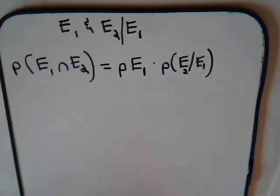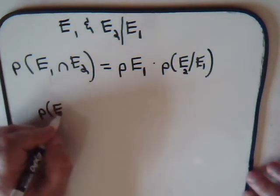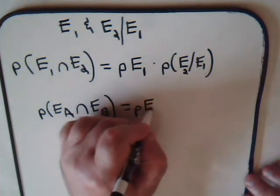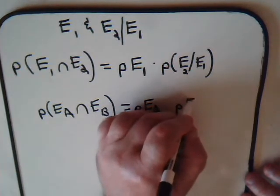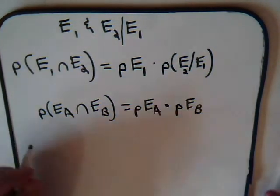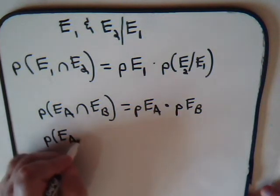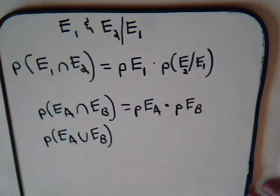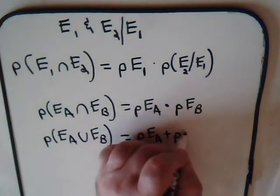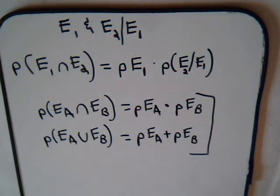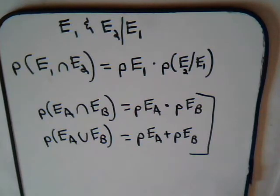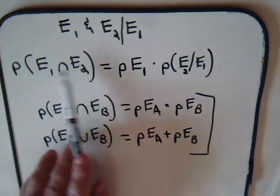What we discussed in earlier videos is that if we had two independent events, Ea and Eb, the probability of their joint occurrence was simply P(Ea) times P(Eb), provided they were independent. Also, if they were independent and mutually exclusive events, the probability of Ea or Eb occurring was just the sum of their probabilities. Here, the conditional probability formula always holds for joint occurrence, whether or not E1 and E2 are independent events.